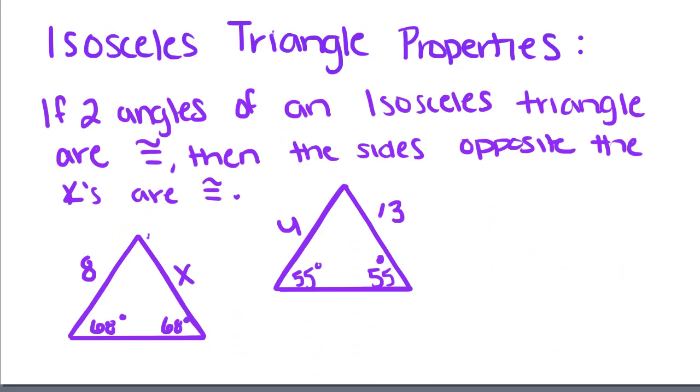So the next property. If two angles of an isosceles triangle are congruent, then the sides opposite the angles are congruent. So since these two angles have the same measure, they're congruent. That means the sides opposite them have to be congruent. So if this side is equal to 8, x has to equal 8.